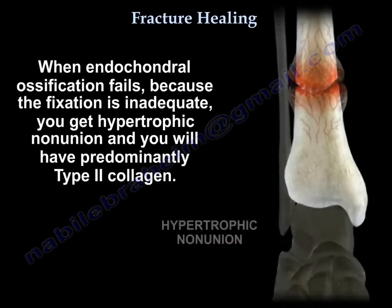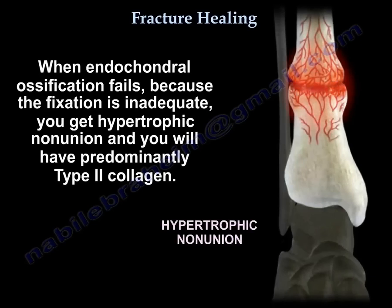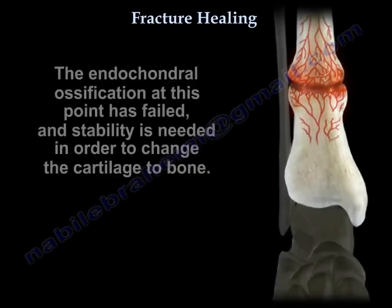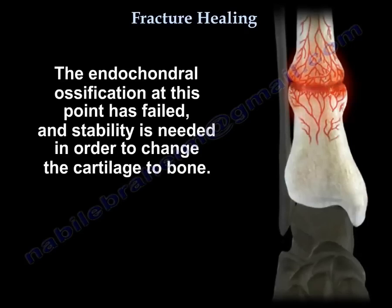When endochondral ossification fails because the fixation is inadequate, you get hypertrophic nonunion, and you will have predominantly type 2 collagen. The endochondral ossification has failed and stability is needed in order to change the cartilage to bone.